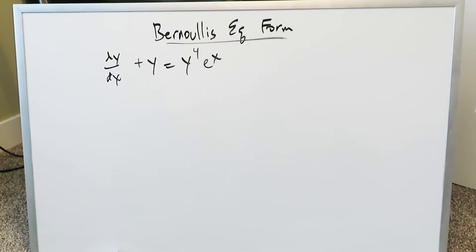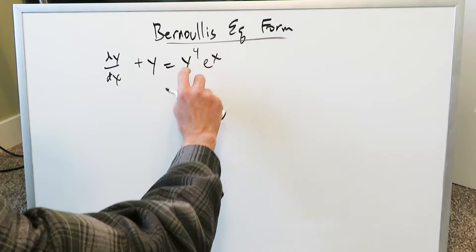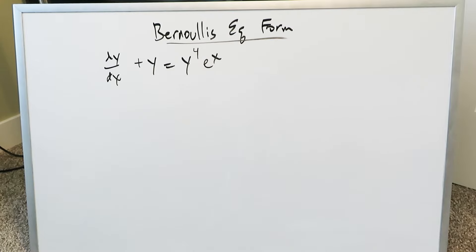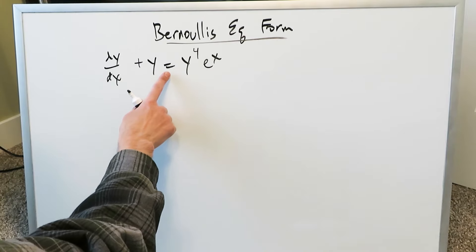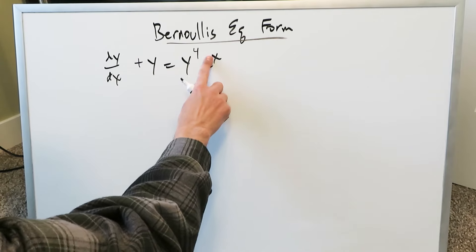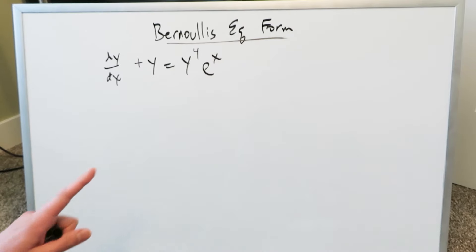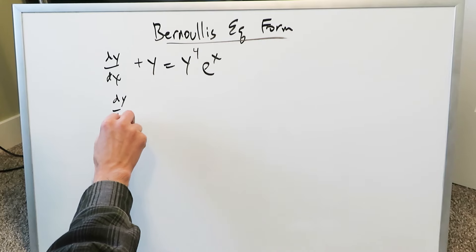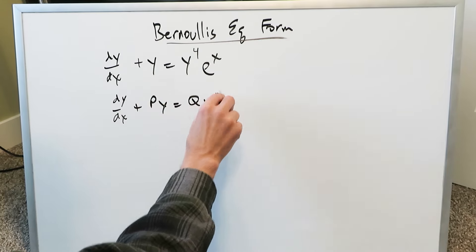Here's our second and last question. A student emailed me this question because they wanted to see it solved, so I'm including it in this video. The equation is dy over dx plus y equals y to the power of 4 times e to the x. Looking at it, you have dy/dx plus py equal to q times y to the power of n — and the y to the power of n item here is y to the 4.